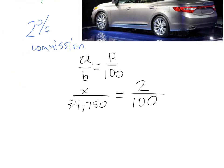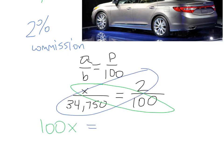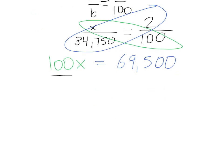So how can we solve this? Well, it's a cross-multiply or butterfly. X times 100, 100X, equals 2 times 34,750. That's going to get you $69,500. And now we just have to divide by 100 to get X by itself. And what you should get is X equals $695.